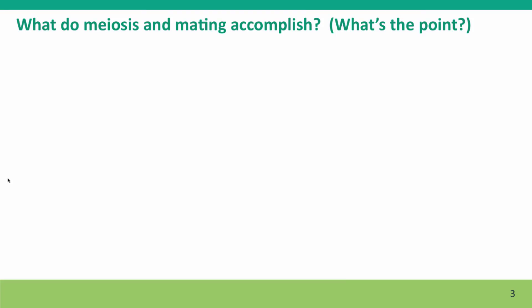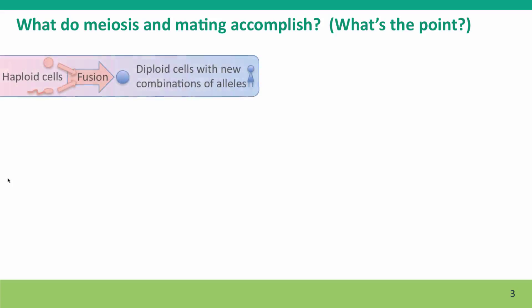So first we can think about what do meiosis and mating accomplish? What's the point of these processes? Because they're quite complex and life would be much simpler if we didn't have them. Mating is a term for the process that leads to the fusion of two haploid cells, typically an egg and a sperm. It takes two haploid cells with N chromosomes, and they fuse to form a diploid cell with 2N chromosomes.